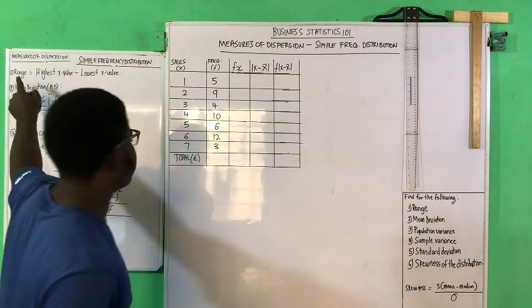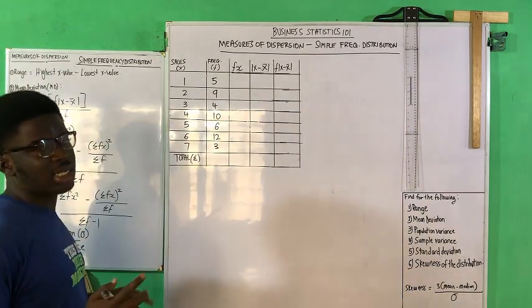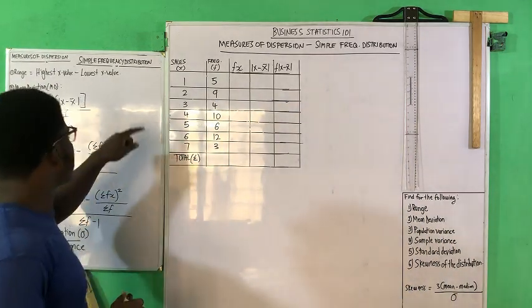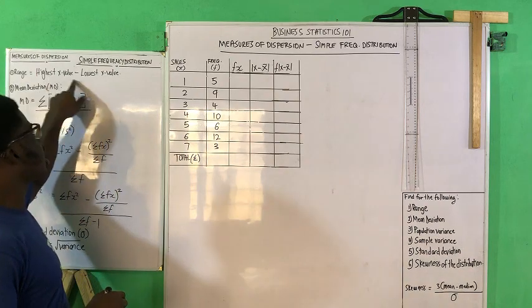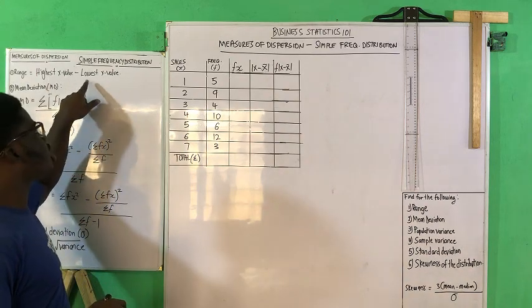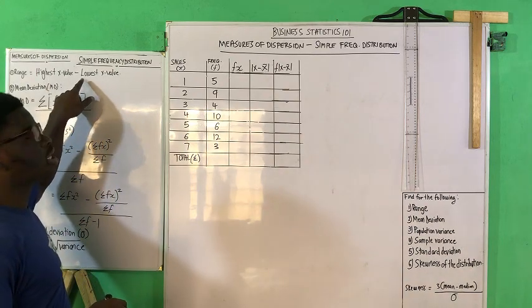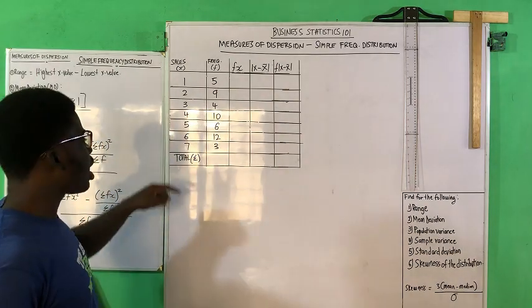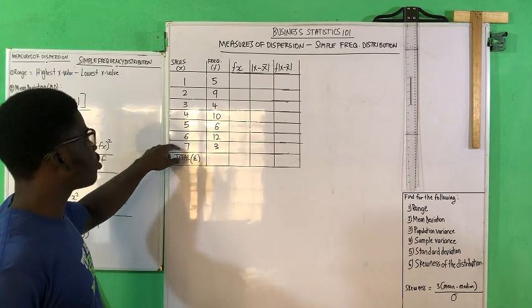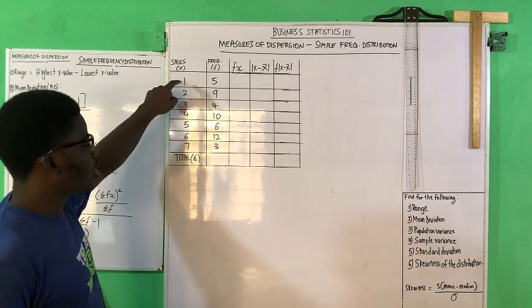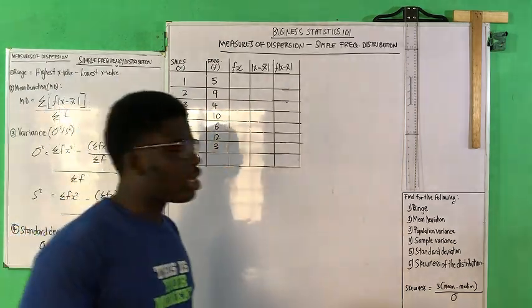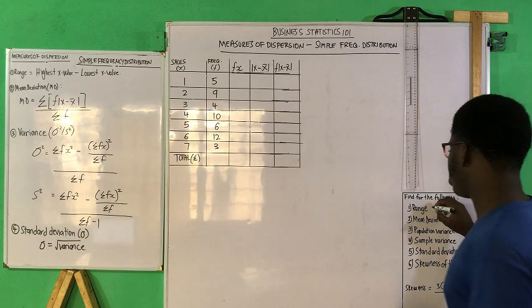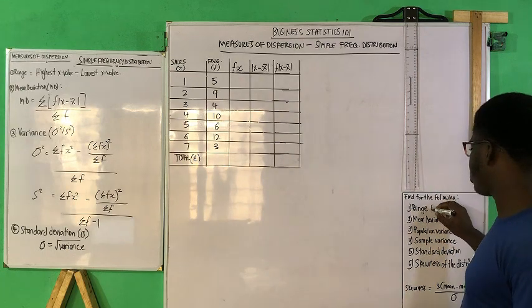We'll start with the range, as I said the easiest one to solve. The highest x value minus the lowest x value — highest being 7, lowest being 1. Obviously the range would be 6. So the range of the distribution is 6.